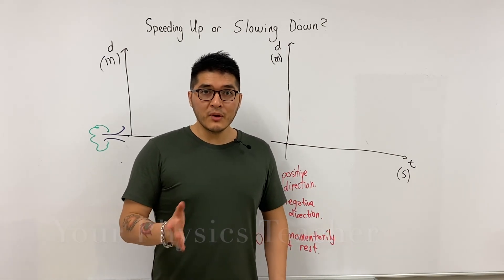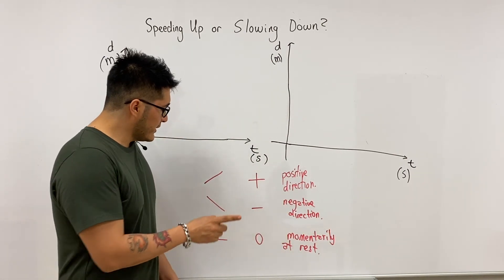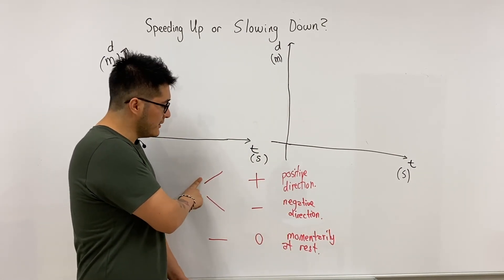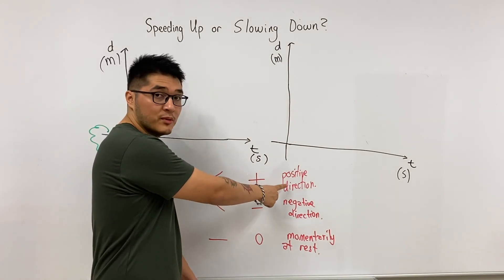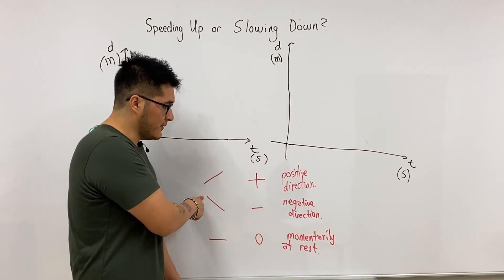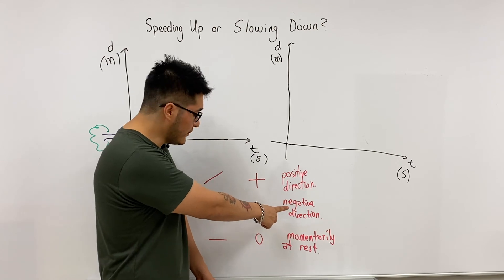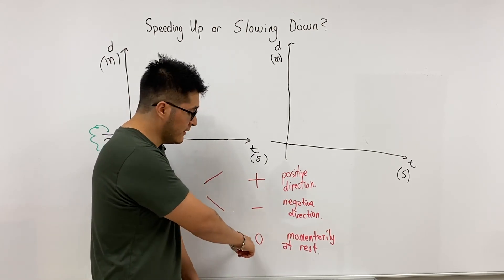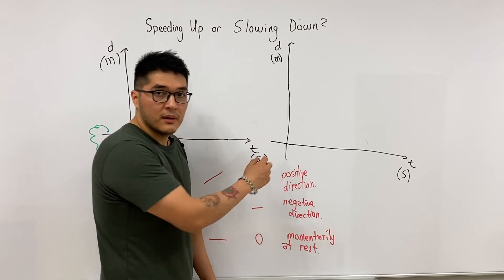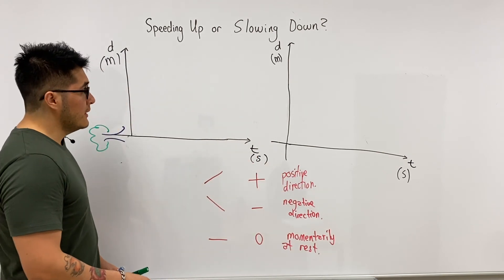Okay, so now we're going to be testing out our slope legend, which is: if a line slants to the right, it's positive, which means it's moving in the positive direction. Slants to the left is negative, which means it moves in the negative direction. And if it's a horizontal line, it's at rest and there's no slope to it.